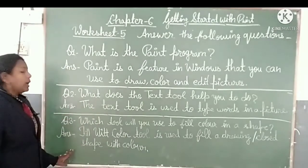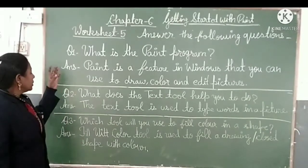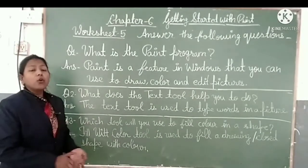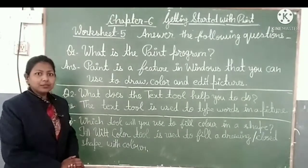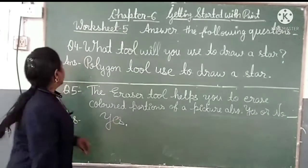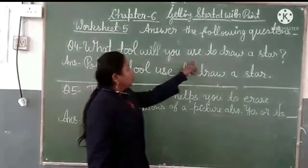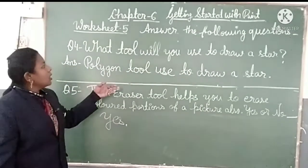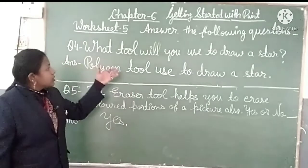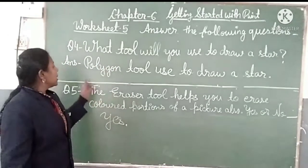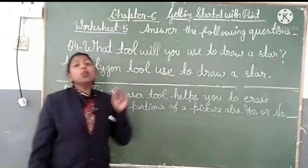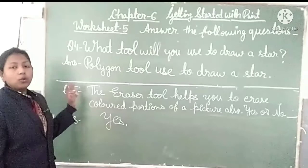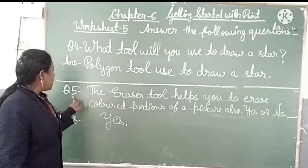Now let's move to questions four and five. Your fourth question is: What tool will you use to draw a star? Which tool do we use to draw a star? And your answer is: the Polygon tool is used to draw a star. We use the Polygon tool to draw a star in Paint.